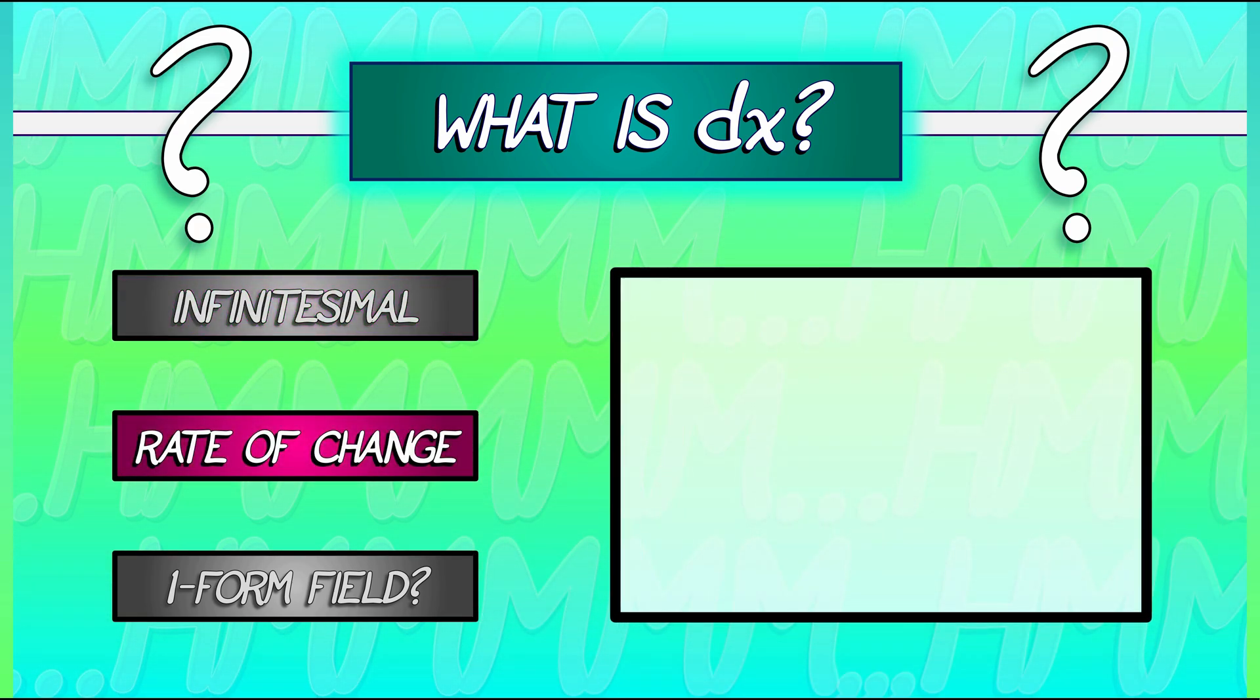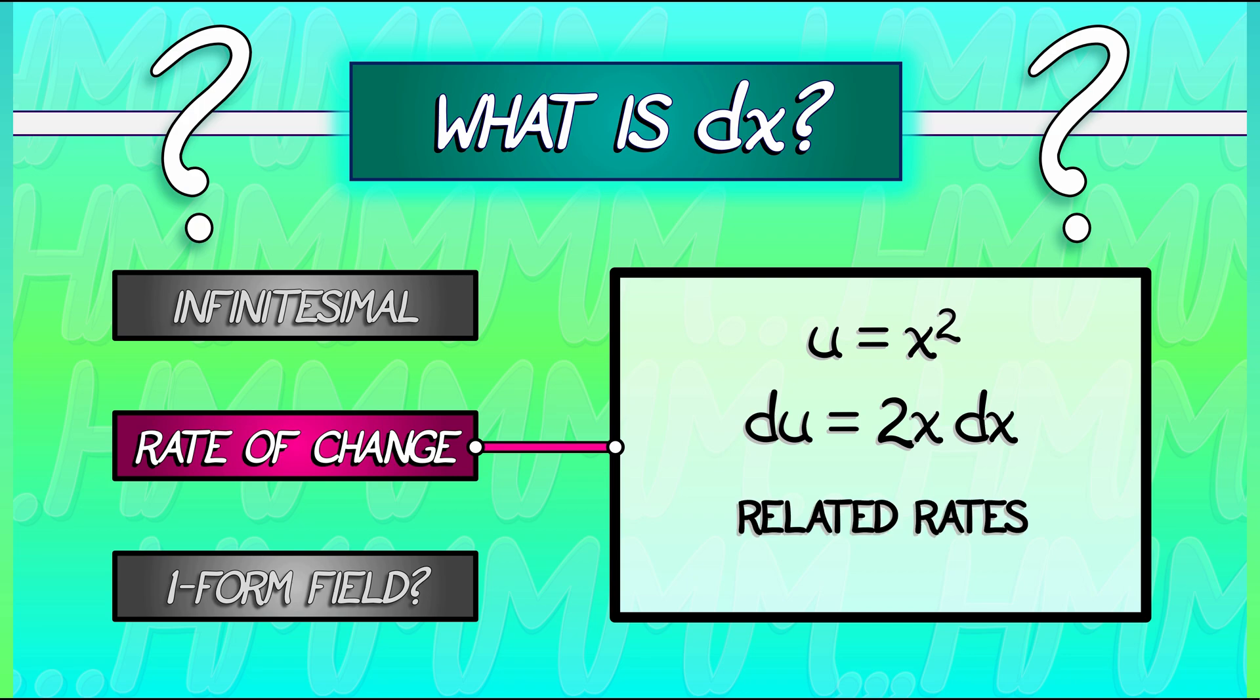Are we going to think about DX in terms of rates of change? Oh, absolutely. Let's say that we have a relationship between two quantities. Let's say U equals X squared. I can think about the rate of change of U as being DU. And what is that in terms of X? Well, you know, it's 2X DX. And we can use that to solve related rates problems, all that kind of stuff.